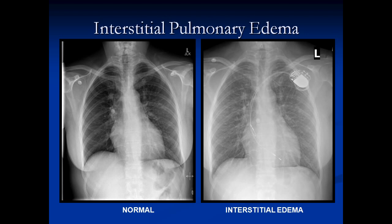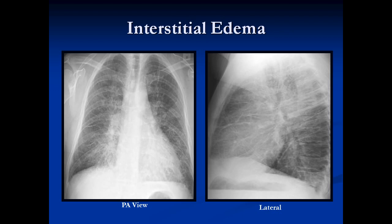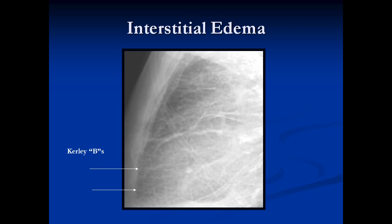This is the same patient — normal on the left, abnormal on the right with interstitial pulmonary edema: way more lines, ground glass haziness, hila are bigger, and the vessels are ill-defined. On the lateral view, there's thickening of the fissures, the hila look bigger and smudged, and sometimes there are small bilateral effusions. To summarize the changes of interstitial edema: peribronchial cuffing, Kerley B lines, thickening of the fissures, small bilateral effusions, increased interstitial markings, and hila enlarged and indistinct.